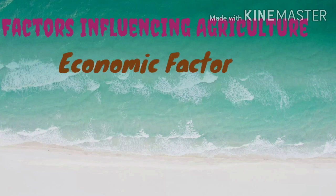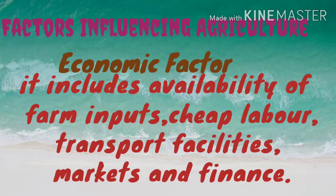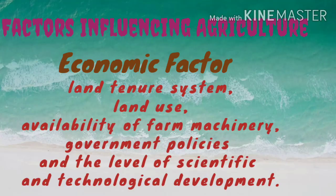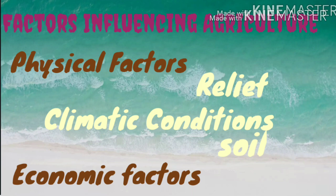The last factor is economic factors. The economic factors include the availability of farm inputs, cheap labor, transport facilities, markets, and loans for the farmers. The main farm inputs are seeds, fertilizers, machinery, and labor. Besides these, other important factors are the land tenure system, land use, availability of farm machinery, government policies, and the level of scientific and technological developments. So dear students, these were the factors which influence agriculture.